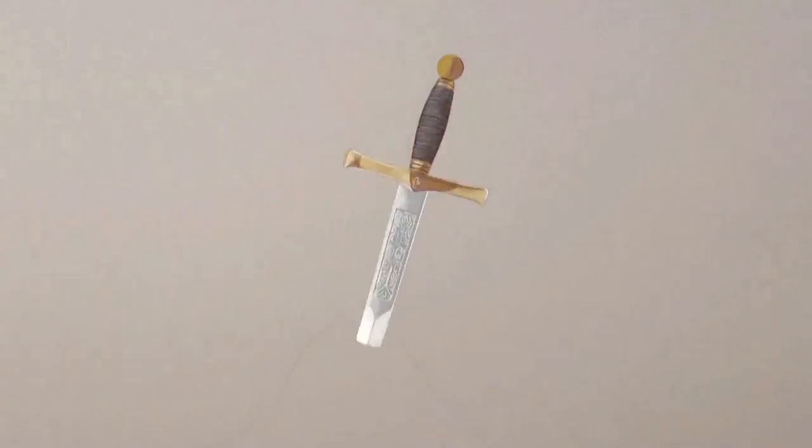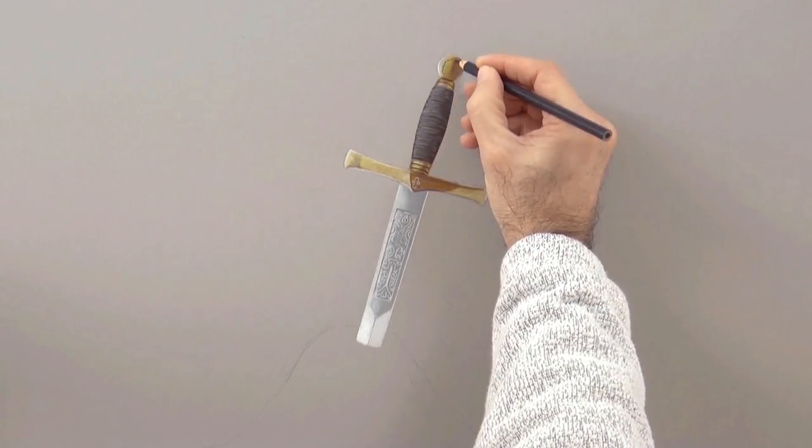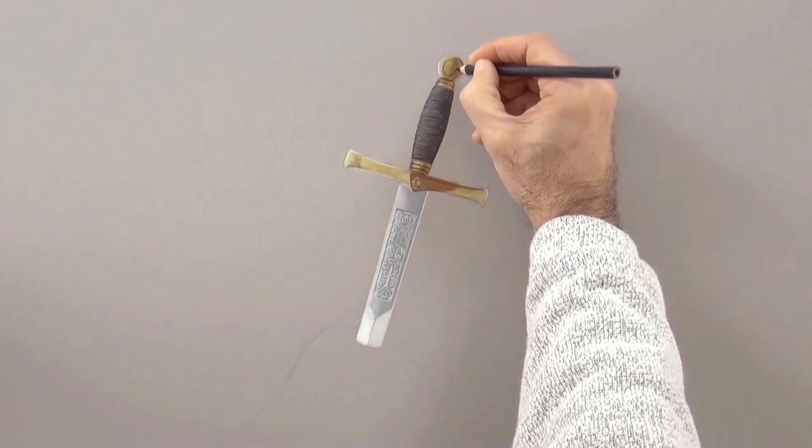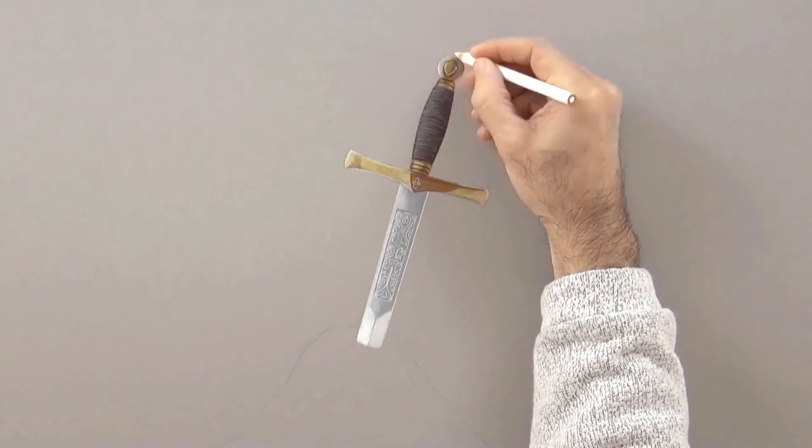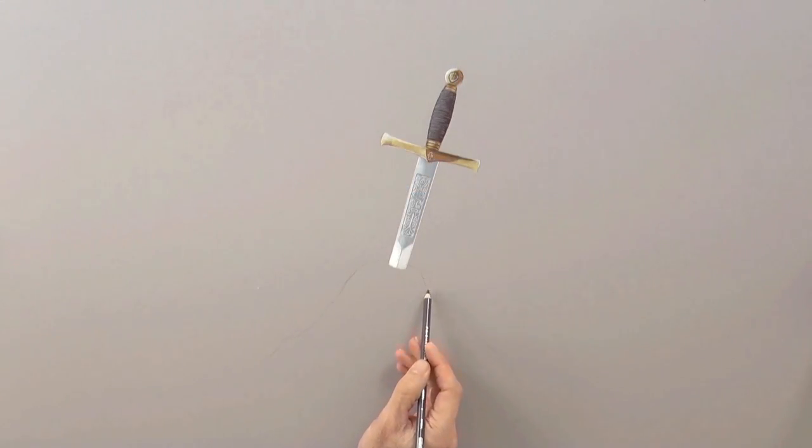Remember that the colored pencils draw well over the markers. But the markers don't paint on the pencils. Therefore the right sequence, obviously, to first put a base with the markers and then draw on them with the pencils.